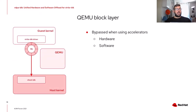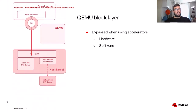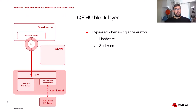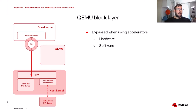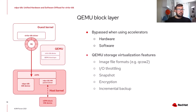All the accelerators we have seen — vhost block, IOUring pass-through, and the VDPA block software or hardware devices — bypass the QEMU block layer. This can be fine when we want to take full advantage of hardware or software accelerator performance. The accelerator has direct access to the guest queue for the best possible performance, avoiding several layers, translations, and queuing. But often we may need QEMU to process requests because we need the storage virtualization features provided by the QEMU block layer, such as image file formats, IO throttling, snapshots, encryption, incremental backup, and other useful features.